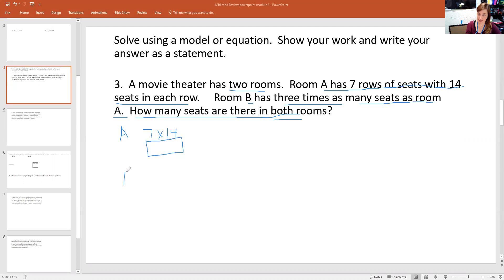And then B, whatever this is, it has three times as many as A. So whenever we figure out A, we know B has three times as many as A. Okay, so let's start by figuring out A.